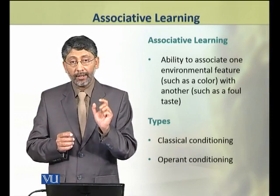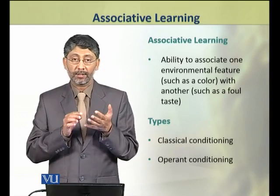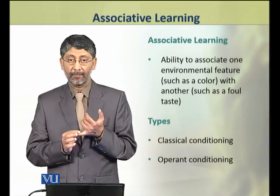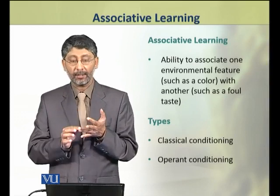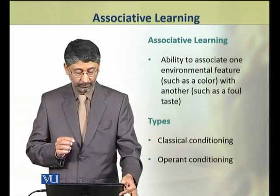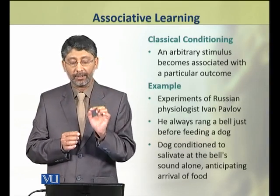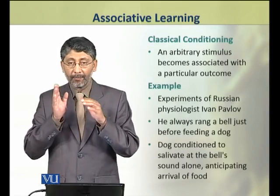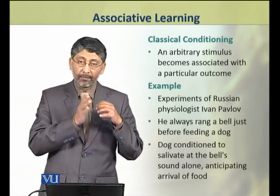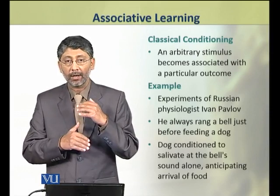Associative learning की दो major types हैं. First is called classical conditioning and the second is called operant conditioning. Classical conditioning is an arbitrary stimulus that becomes associated with a particular outcome.